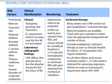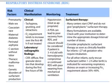Risk factors include prematurity, male sex, Caucasian race, maternal diabetes, perinatal asphyxia, and C-section without labor. In normal vaginal delivery, there is compression of the lungs during passage of the baby, which leads to expression of fluid out from the lungs, preventing RDS. A C-section leads to RDS because there is no compression of the baby's chest.